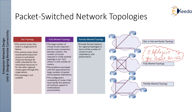Now, packet switch network topologies. There are three different topologies available: star or hub-and-spoke topology, fully mesh topology, and partially mesh topology. Star topology shows a star-like diagram with a central hub. Fully mesh means each and every device is connected to every other device. Partially mesh means some devices are fully connected while others are only partially connected, similar to a tree structure.